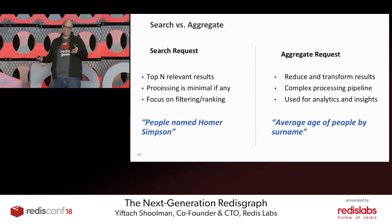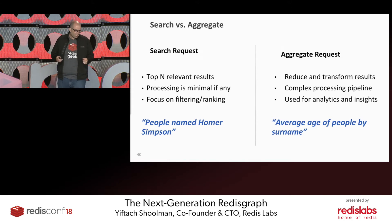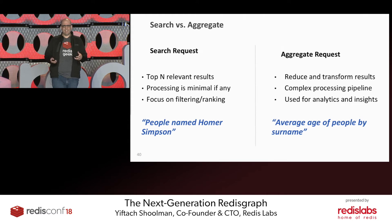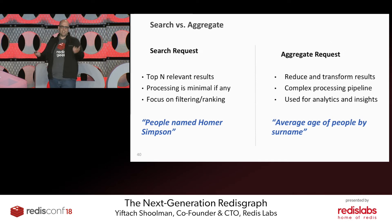What we've added lately — released just yesterday — is RediSearch Aggregations. With search, we basically want to find a small subset of documents that answer some query. But with aggregations, we say: let's take a large number of records — maybe all records — and process them. We already have a very fast search engine and fast data access inside Redis, so why not add the ability to process them and extract statistical insights?